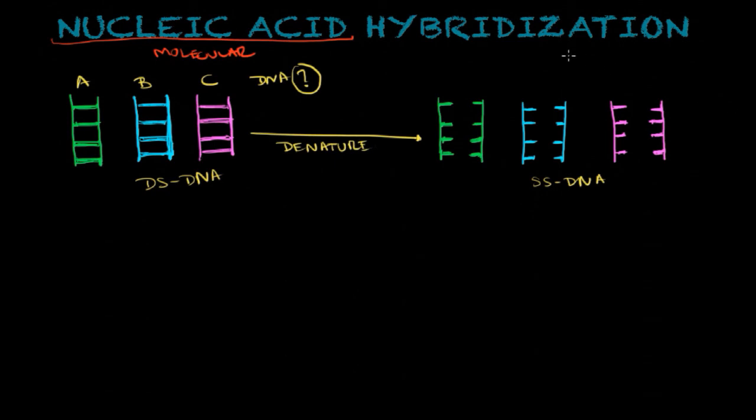Denaturing is basically, if you remember well from our nucleic acid tutorial, when you break these hydrogen bonds between the nucleotides. What's going to happen then is they're going to turn into single-stranded DNA molecules. This is done at roughly 95 degrees Celsius. So basically what you do, you increase the temperature to break those hydrogen bonds.